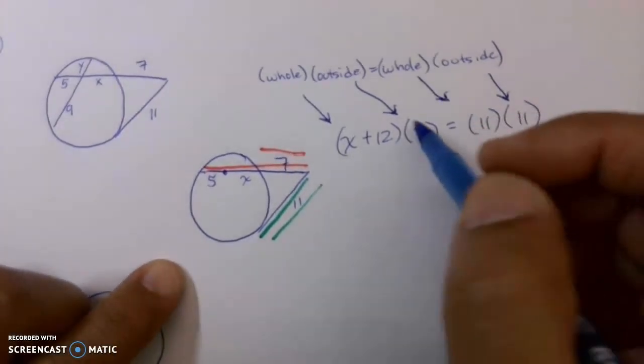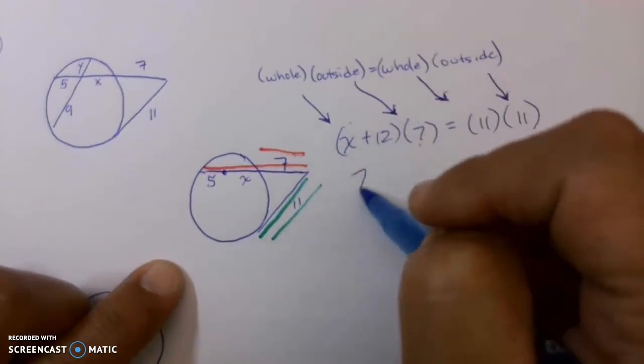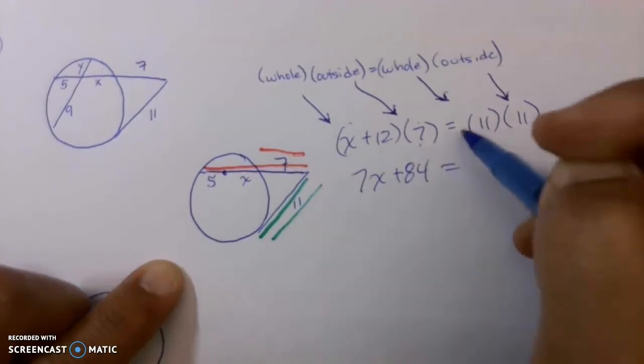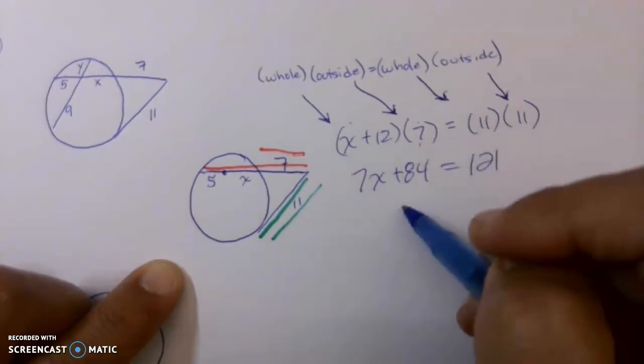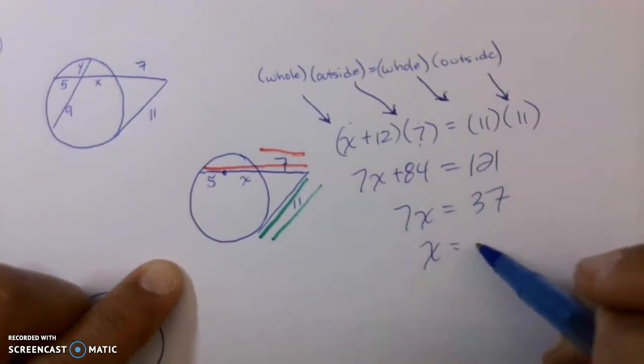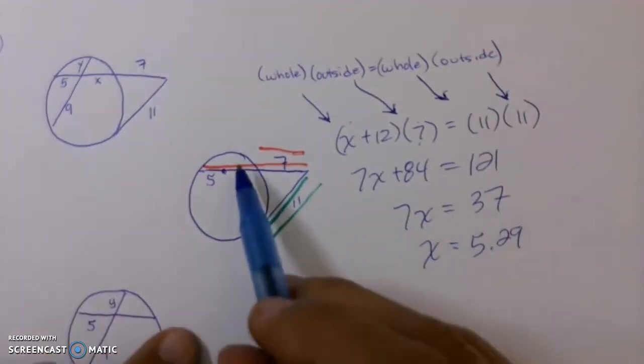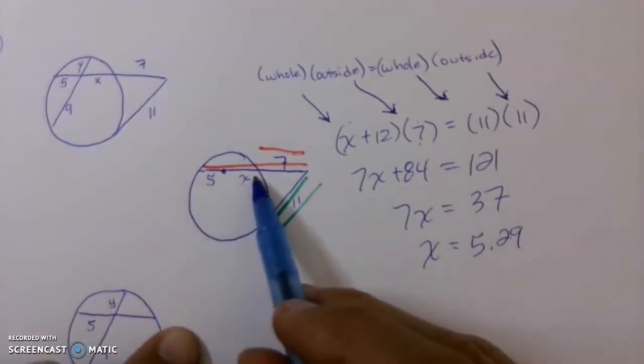And then if you just multiply this to your distributive property, 7 times the front, 7 times the back here. This is 7X plus 84. 11 times 11 is 121, minus the 84 over, that's 37. X will end up being, divide by 7, about 5.29. Okay? 5.29, 5, 5.29, and 7.